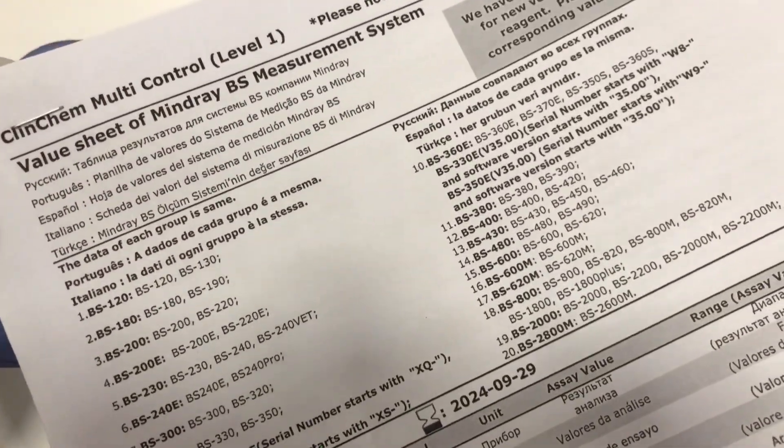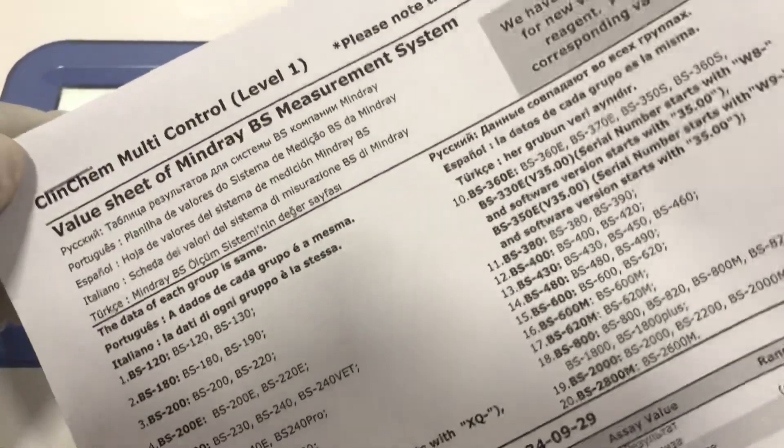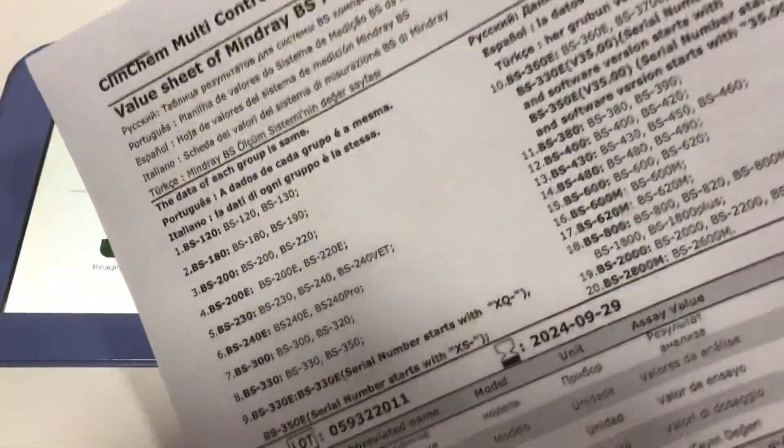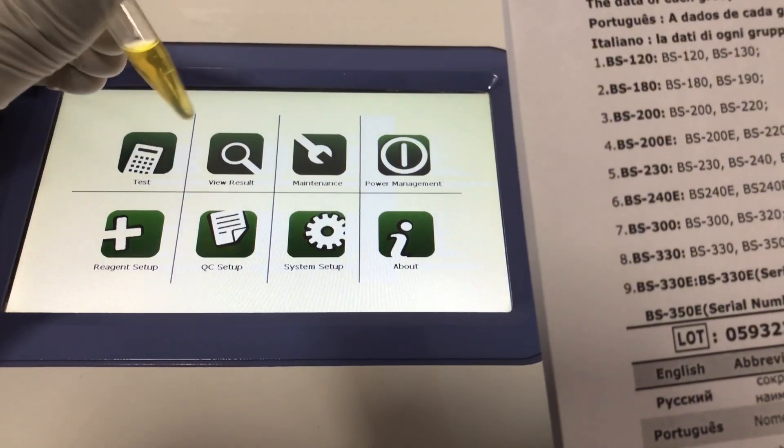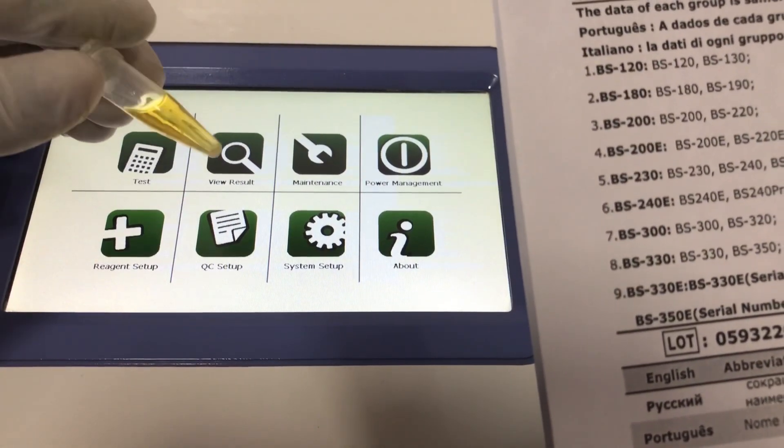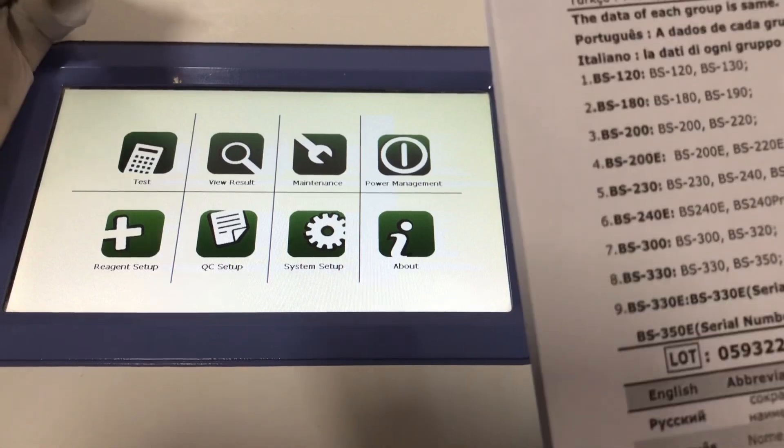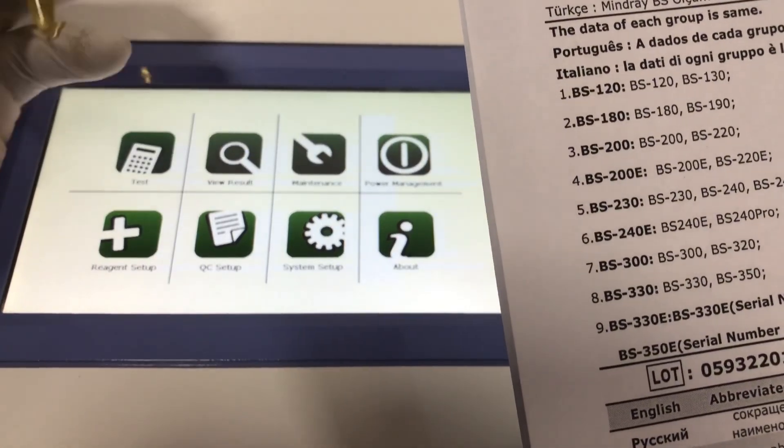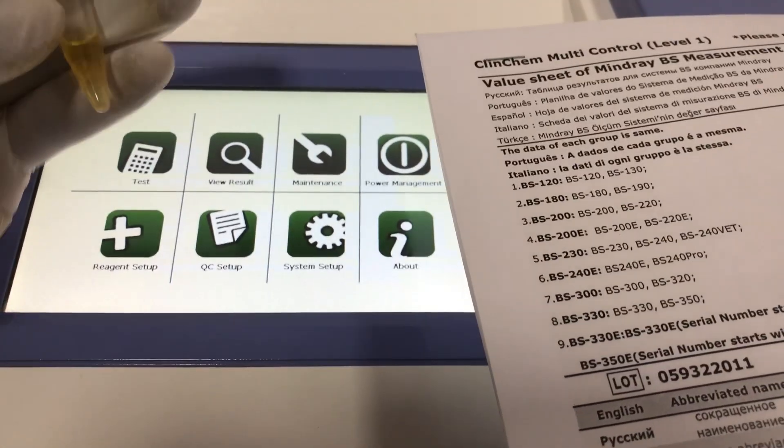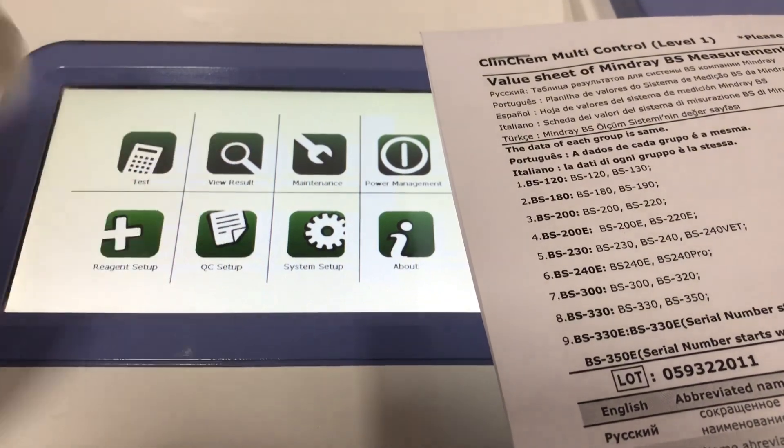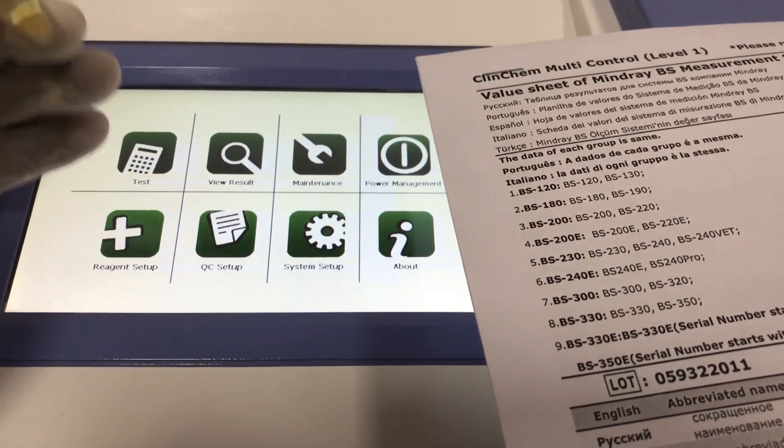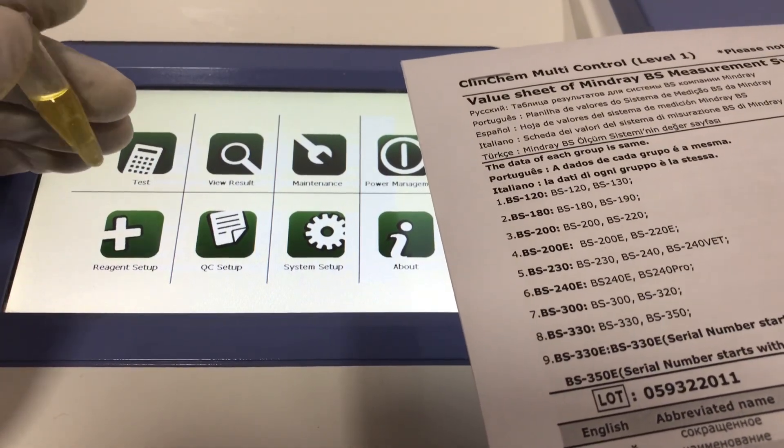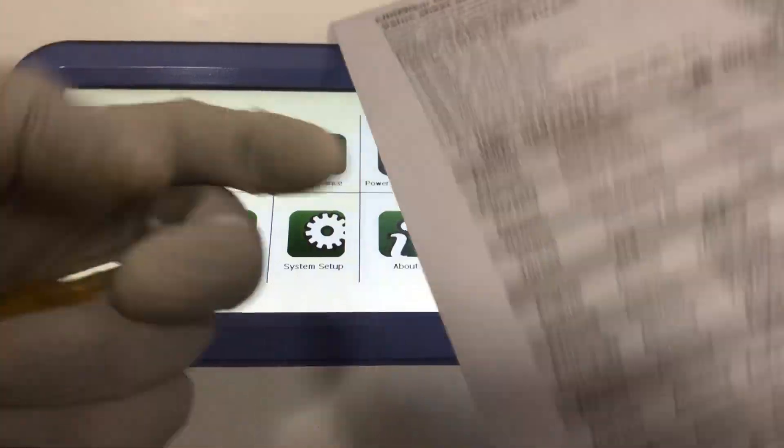The control samples come with their own value sheets for the measurements. The control samples mimic the human sample, so they come with known values. Let's say albumin - they'll give you the expected value for the albumin and then also give you the standard deviation. When you run it on your machine you are supposed to get the same thing. When you get the same thing it simply means that your machine is running effectively.